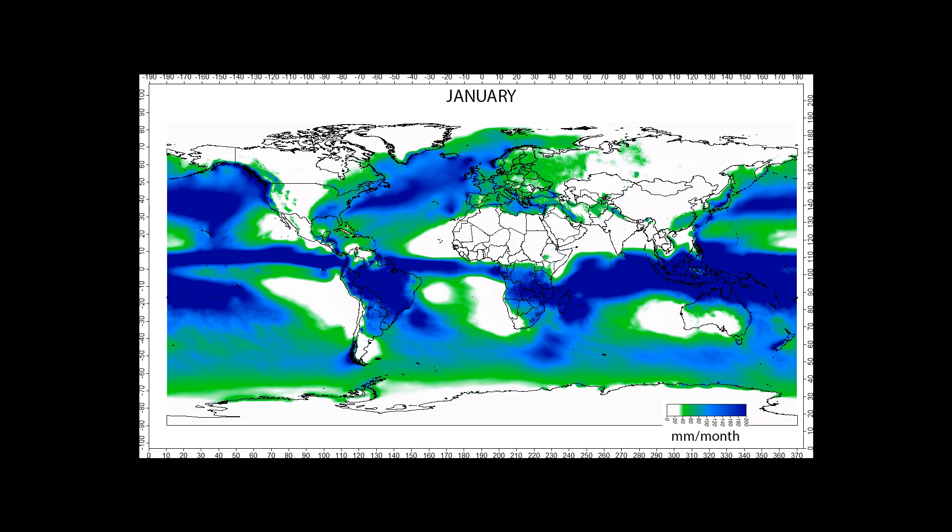In mountainous areas, heavy precipitation is possible where up-slope flow is maximized within windward sides of the terrain at elevation. On the leeward side of mountains, desert climates can exist due to the dry air caused by compressional heating.